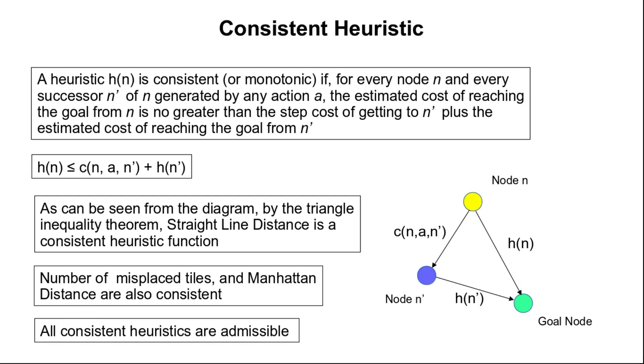It is possible to prove that all consistent heuristics are also admissible. However, the opposite may not be true — just by being admissible, a heuristic function need not be consistent. In the next class we will talk about the optimality of A* algorithm and make use of these concepts of admissible and consistent heuristics.